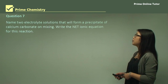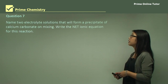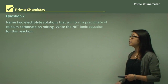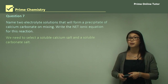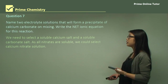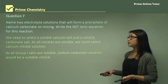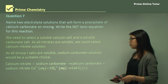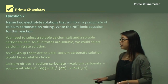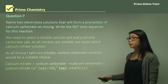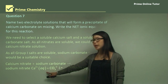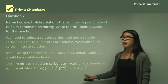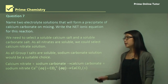Question seven: name two electrolyte solutions that will form a precipitate of calcium carbonate on mixing, and write the net ionic equation. We need a soluble calcium salt and a soluble carbonate salt. All nitrates are soluble, so we choose calcium nitrate; all group one salts are soluble, so we choose sodium carbonate. The net ionic equation (no spectator ions): calcium (aq, 2+) plus carbonate (aq) forms solid calcium carbonate — write the S for solid.